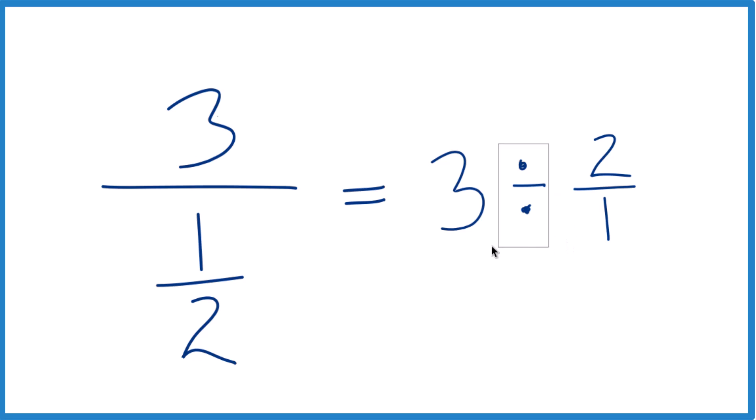Because when we do that, we can get rid of the division, call it multiplication. And for the 3, let's call that 3 over 1. It's the same thing we're dividing by 1, but now everything lines up real nice.